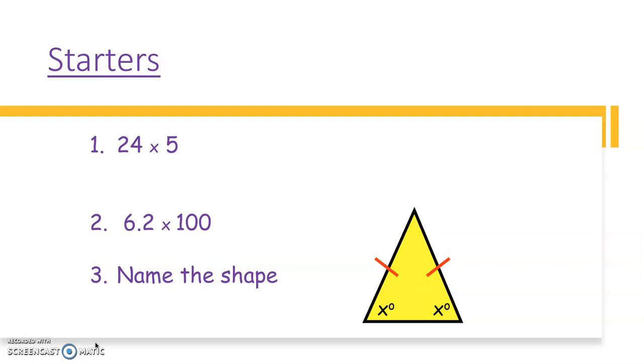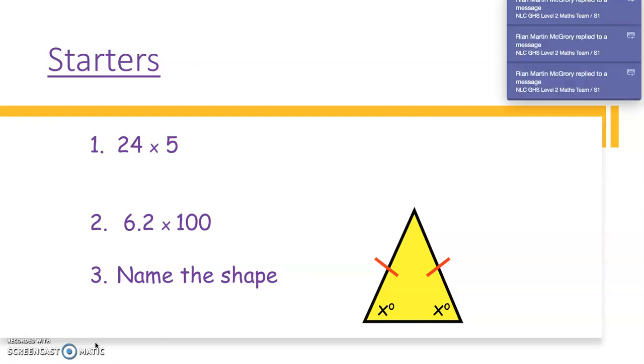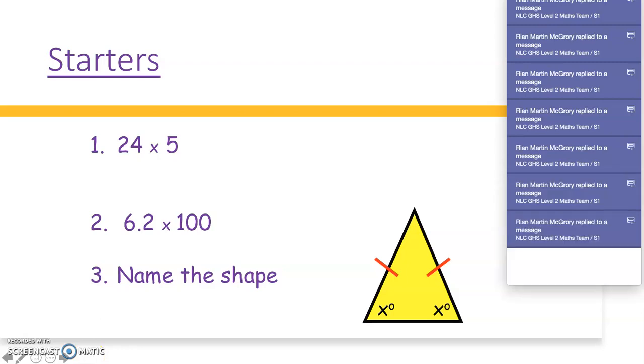Number one, what's 24 multiplied by 5? Number two, what is 6.2 multiplied by 100? And number three, name this shape. So pause the video and then come back.